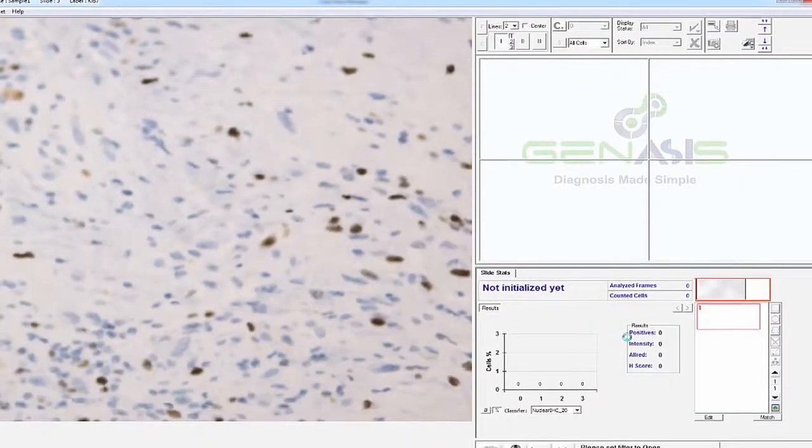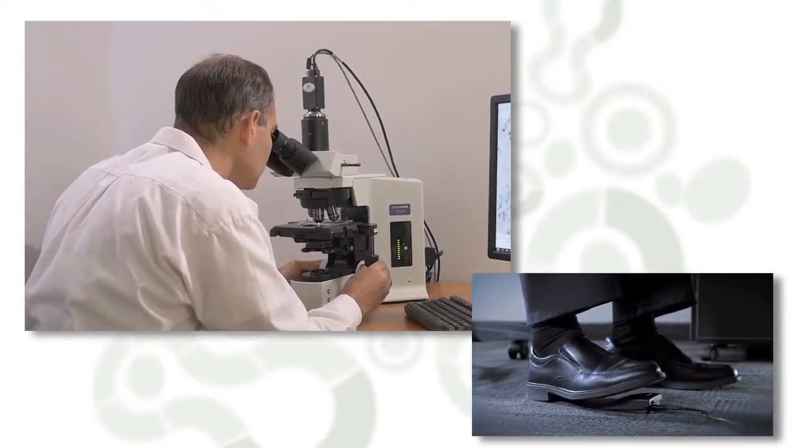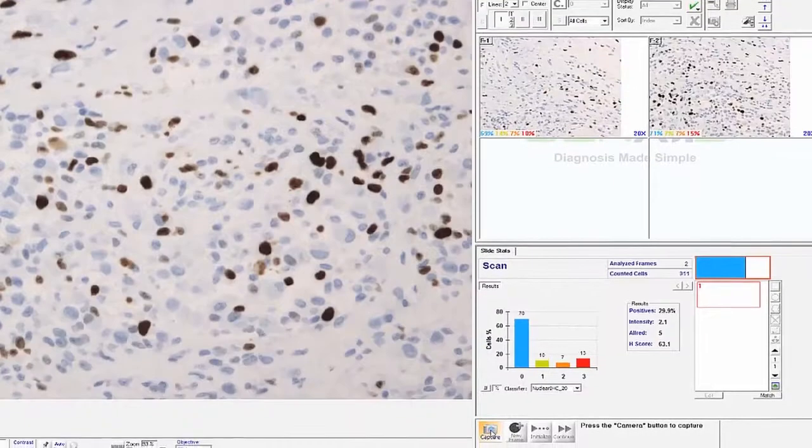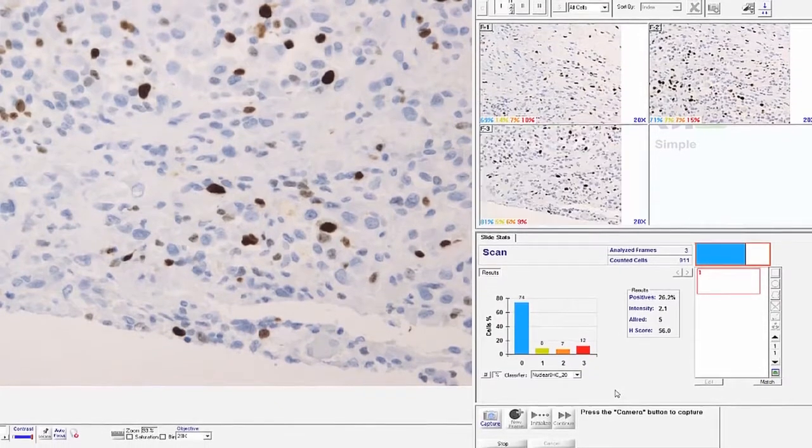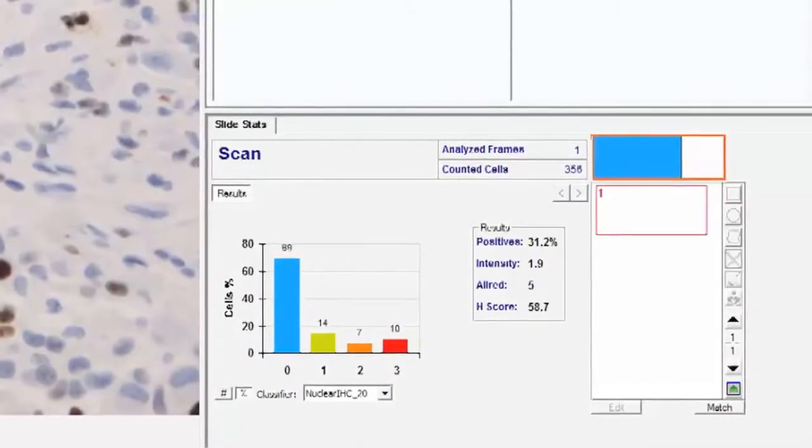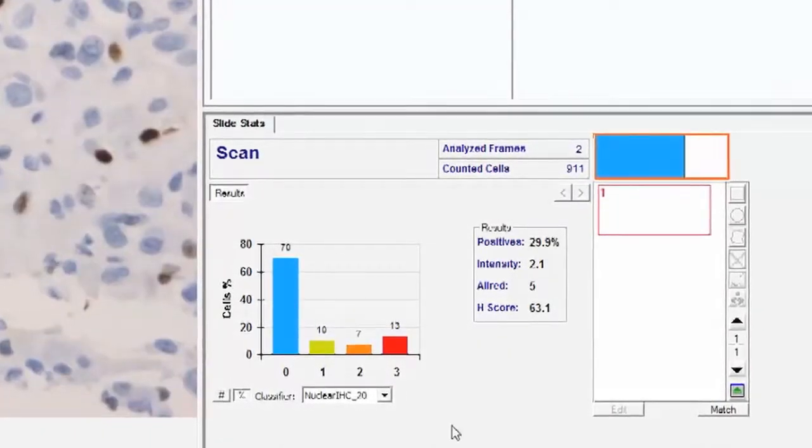Relevant tumor regions are then captured using a high-resolution camera and analyzed in real-time. HiPath segments and classifies all tumor cells using ASI's advanced image analysis algorithms. Quantitative scores and statistics are displayed in real-time.